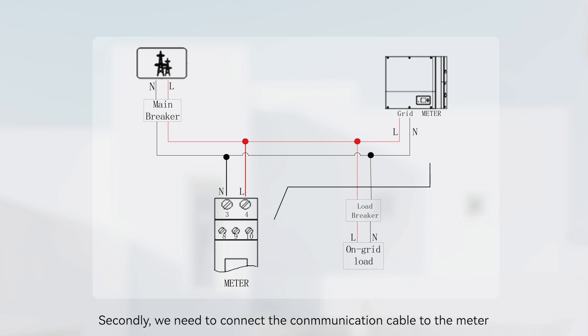Second, connect the communication cable to the meter. Connect the RS485A communication line to port 10 of the smart meter. Connect the RS485B communication line to port 9 of the smart meter.